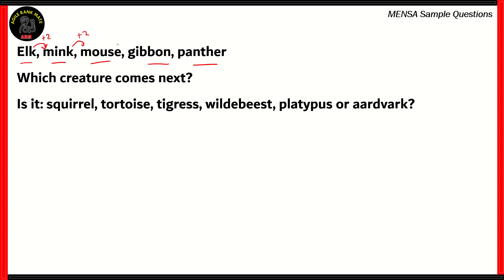The second word ends in a K again, so it has to start with an M again — plus two. Now mouse ends in an E, the next letter is F, and the letter after that is G, which is where gibbon starts. Similarly, gibbon ends in an N, the next letter is O, and the letter after that is P — and that's where panther starts. So we have a working relation. Since panther ends in R, the next word has to begin with T, because S follows R and T follows S.